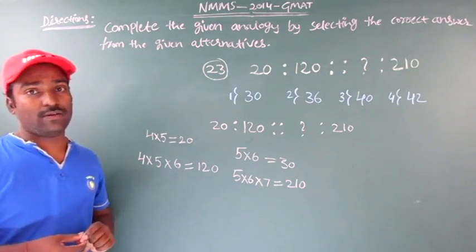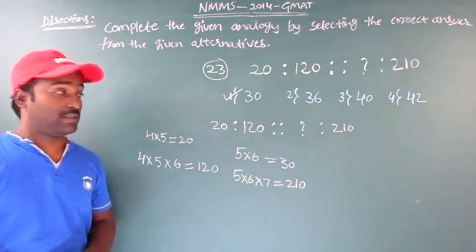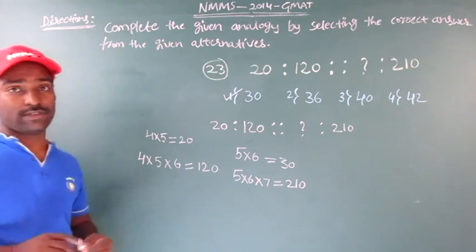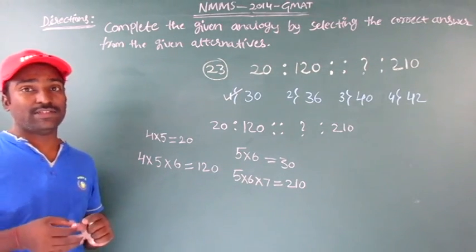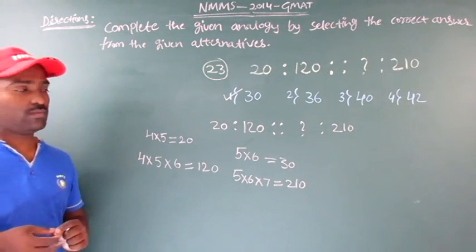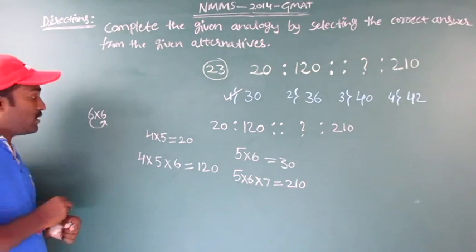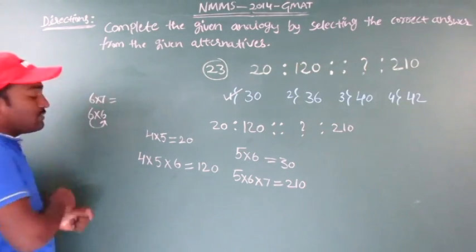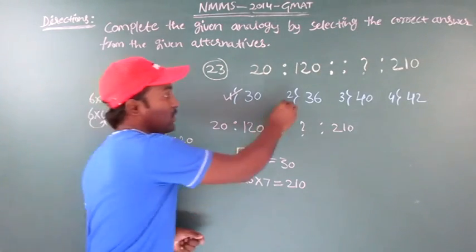First option itself is the right option. But we can check the second option for convenience, to verify whether it is correct or not. Second option is 36. I have to write 36 as a product of two consecutive numbers. No — 36 can be written as 6 into 6, but 6 and 6 are not consecutive. The consecutive number after 6 is 7, but 6 into 7 is 42, not 36. So the second option is wrong.